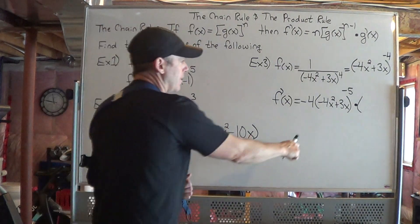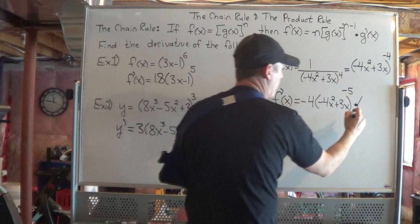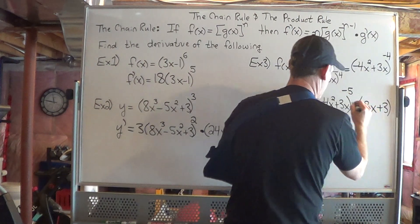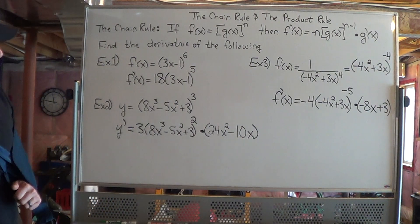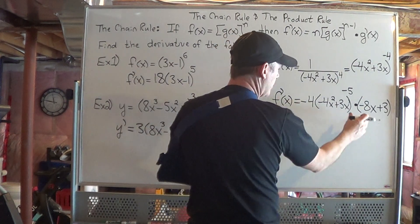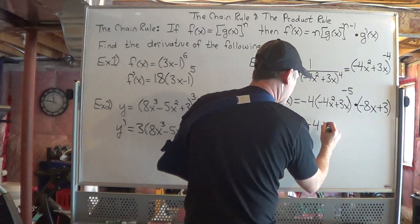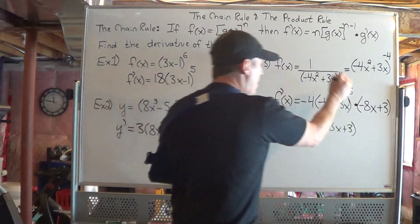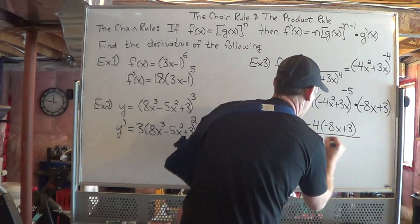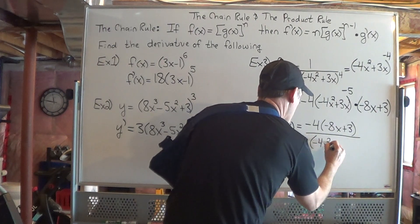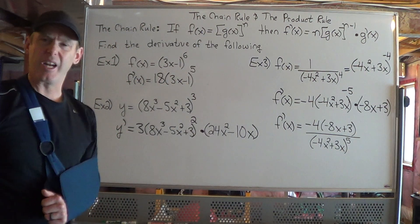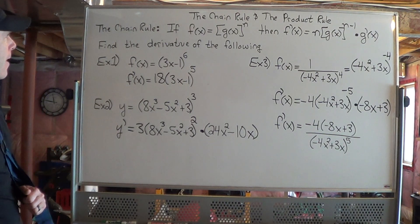So my derivative f prime of x: bring the negative 4 down in front, I have my function negative 4x squared plus 3x, subtract 1 from the exponent — so negative 4 minus 1 is negative 5 — then times the derivative of the function inside. The derivative of negative 4x squared is negative 8x, and the derivative of 3x is just 3. So we get negative 4 times negative 8x plus 3, times negative 4x squared plus 3x to the power of negative 5. I could also flip the expression back to the denominator by changing the exponent back to positive 5. That's our chain rule.